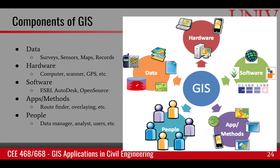These users could be a manager at a dam deciding whether to open the gates to let floodwaters pass, or a policy maker in Washington DC deciding whether to increase certain subsidies for farmers in a certain region of the country. These five components together constitute the GIS that we use on a day-to-day basis.